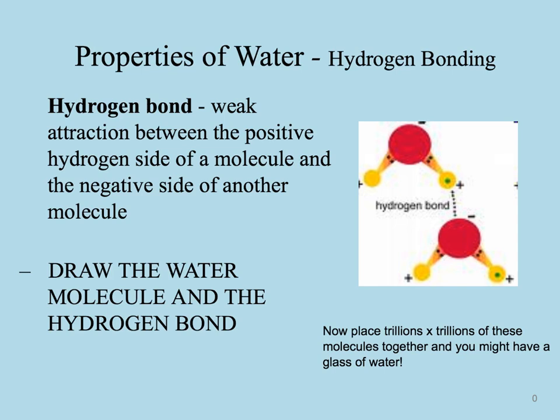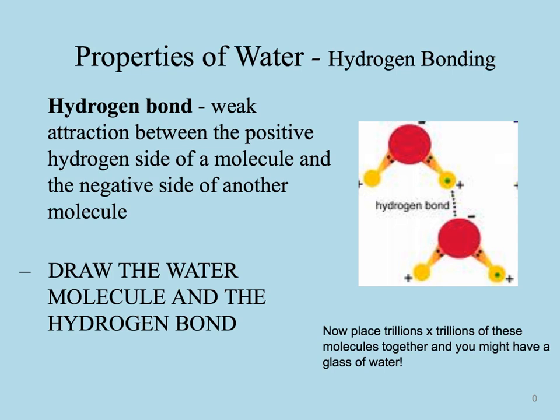So again, hydrogen bonds are weak because they are the attraction between the positive side of one molecule and the negative side of another molecule. A big thing you're going to have to be able to do is draw and label the parts of a water molecule and discuss the two different bonds found in a water molecule.